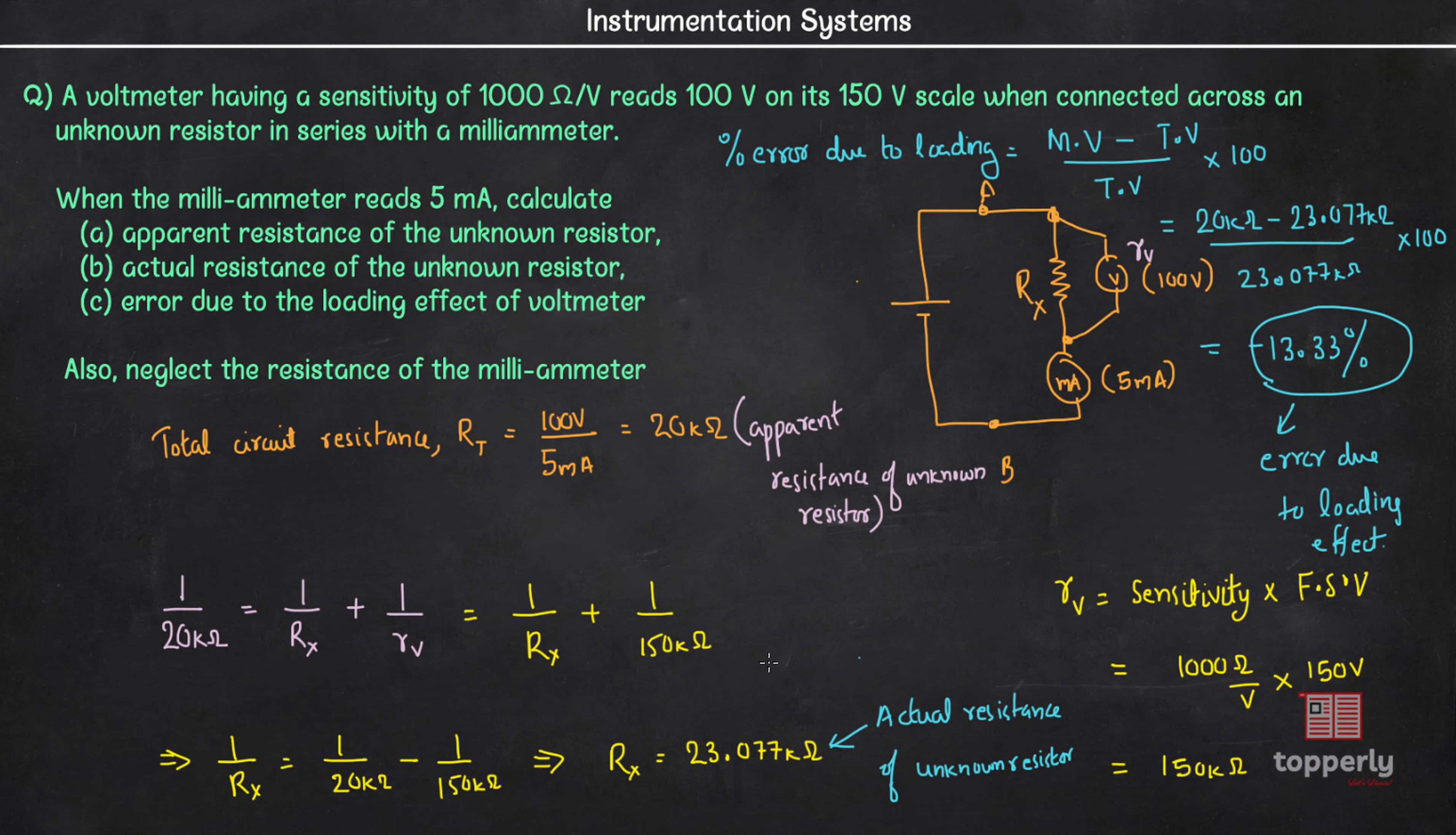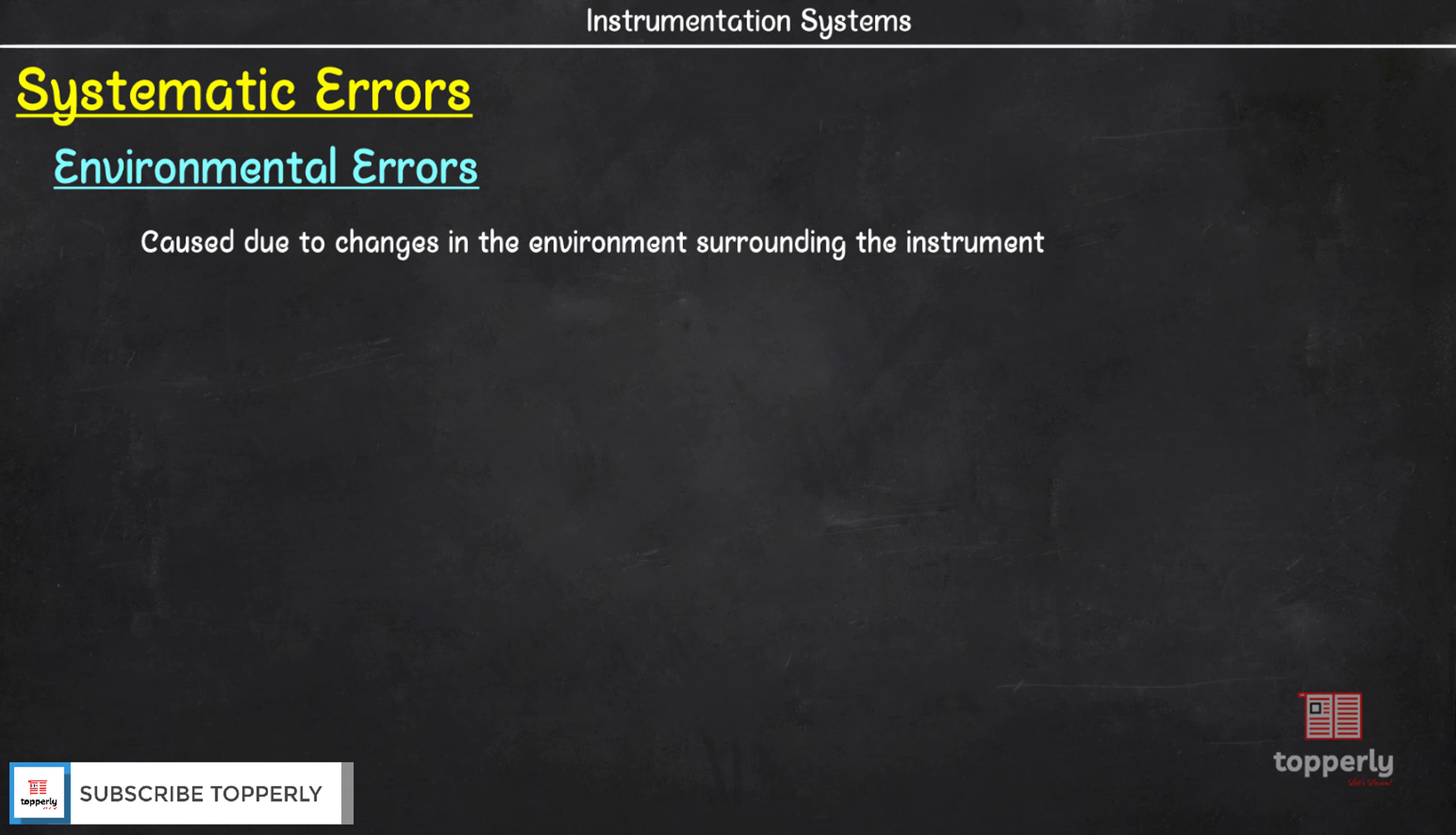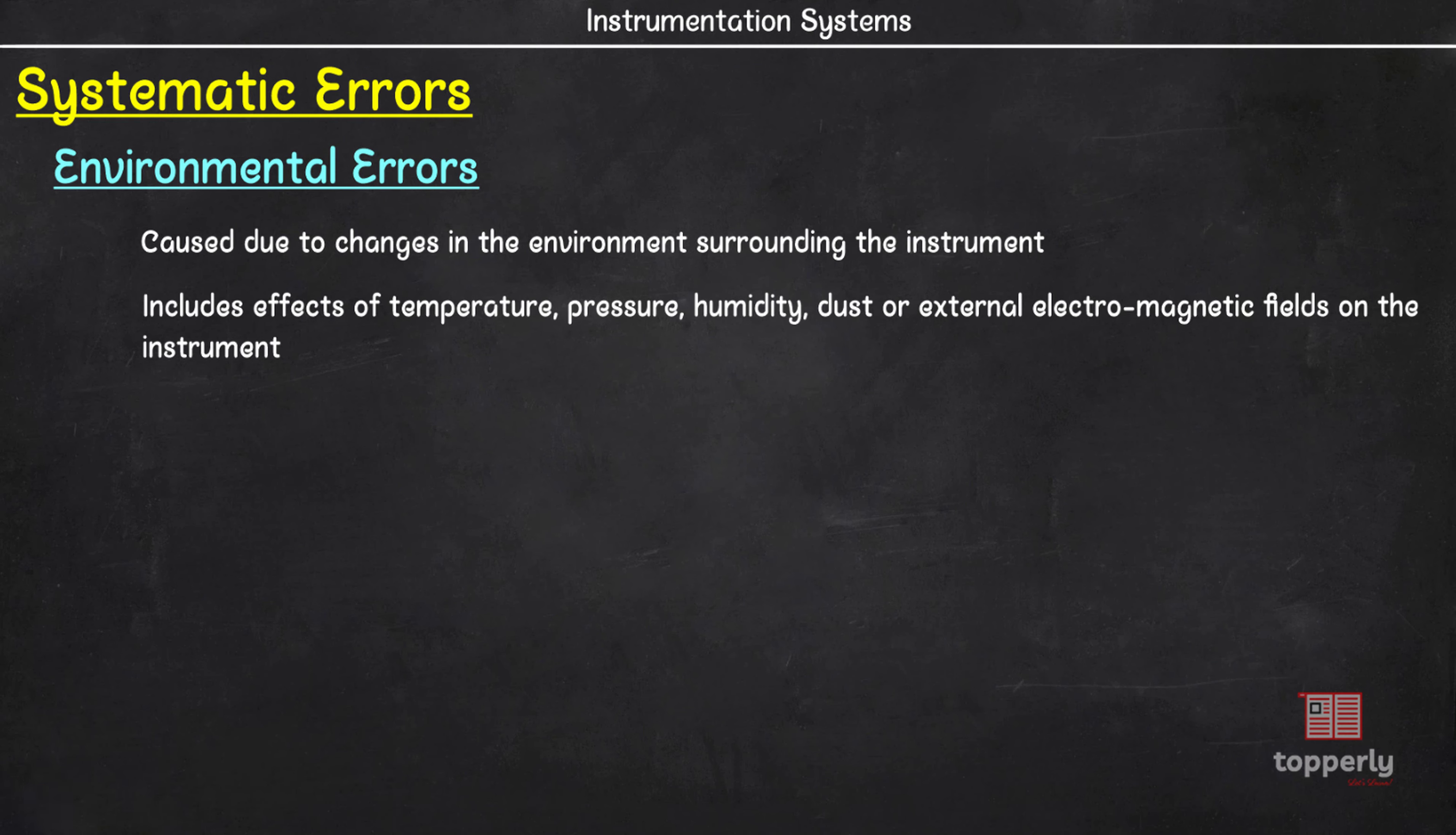Next under systematic errors, we have environmental errors. These are errors caused due to changes in the environment surrounding the instrument. Environmental errors are caused due to the effects of temperature, pressure, humidity, dust, vibrations, or external magnetic and electrostatic fields on the instrument. These errors can be reduced or eliminated by taking corrective measures like air conditioning or use of electromagnetic shields.